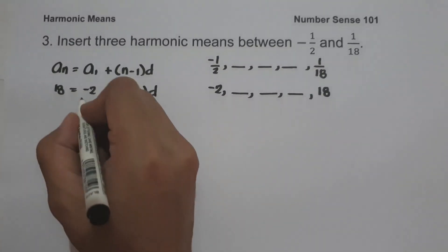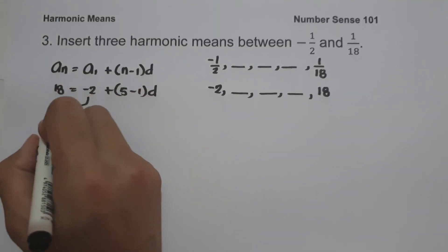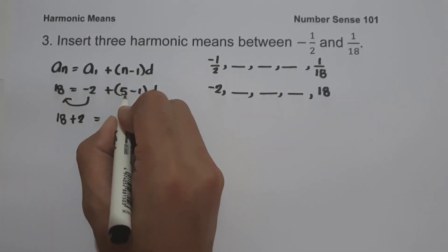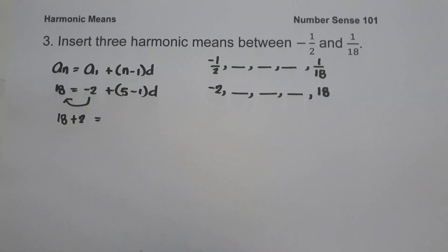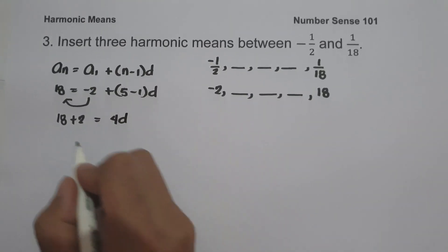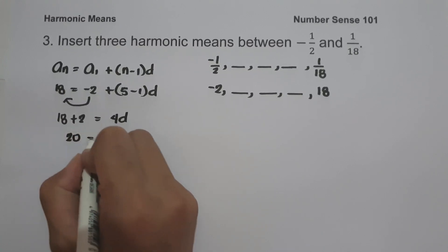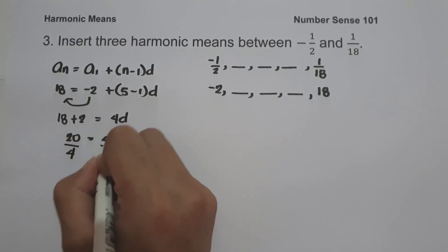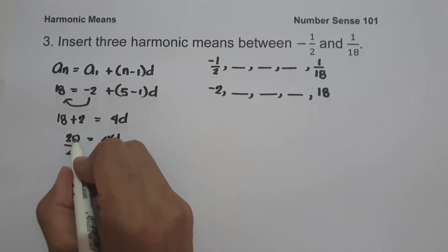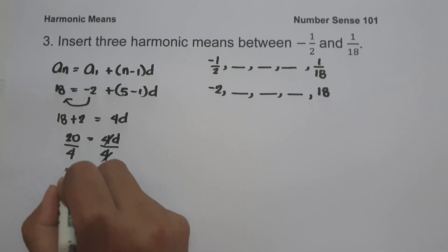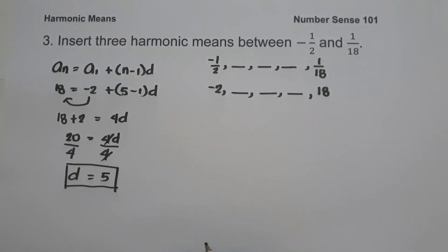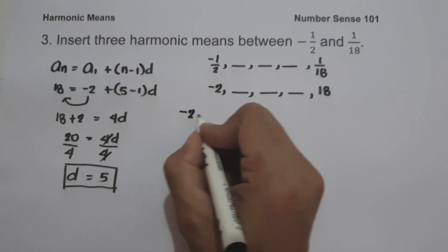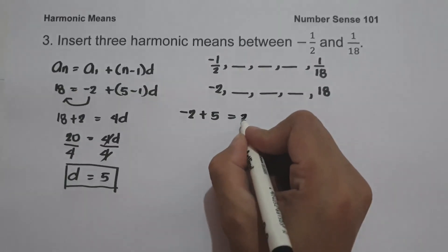Here a sub n is 18 and a sub 1 is negative 2. Moving negative 2 to the other side: 18 plus 2 equals 5 minus 1, that is 4, times d. So 20 equals 4d. Dividing both sides by 4, the common difference d equals 20 divided by 4, which is 5. To find the next term, we add d to our first term: negative 2 plus 5, that is 3.